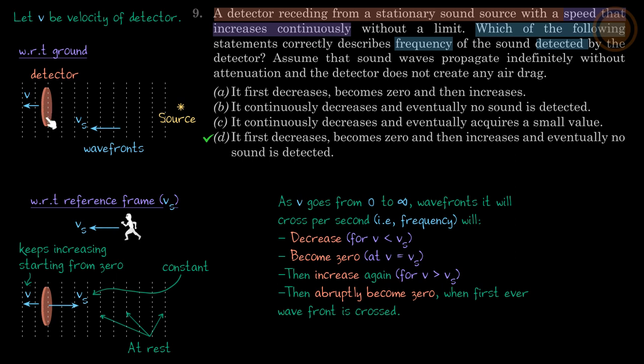So now we have to change the reference frame. Let's get to the reference frame that's moving along with the wavefront with the velocity of sound. In this frame, the detector is moving back with velocity vs minus v. This v keeps increasing starting from zero, and this vs is constant.